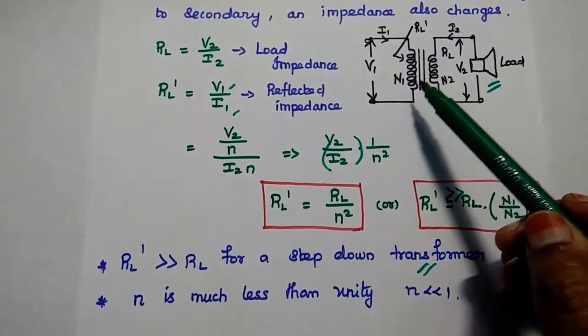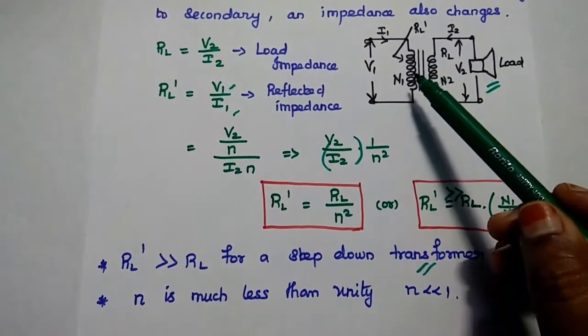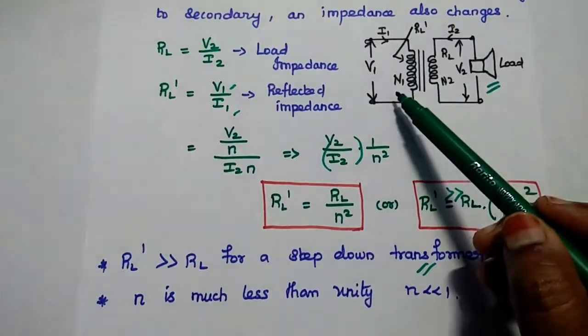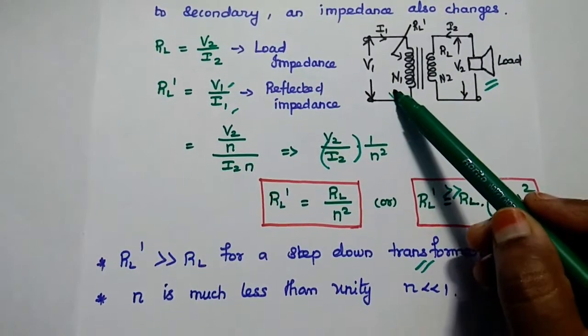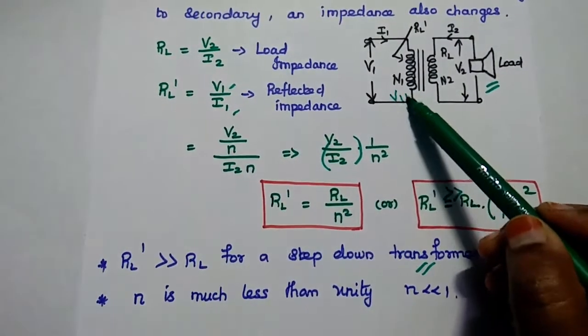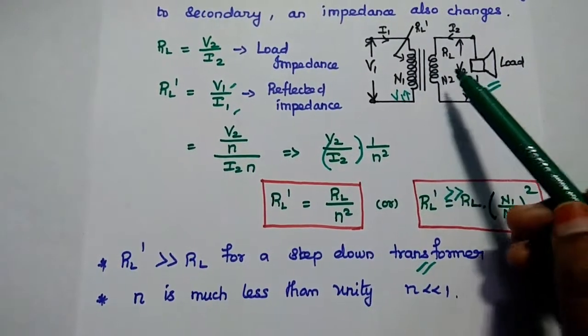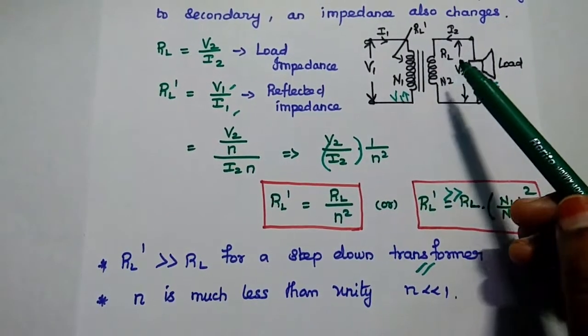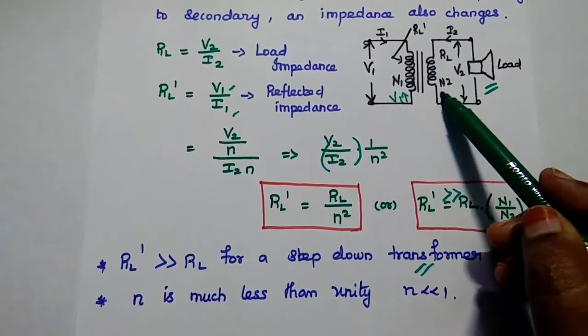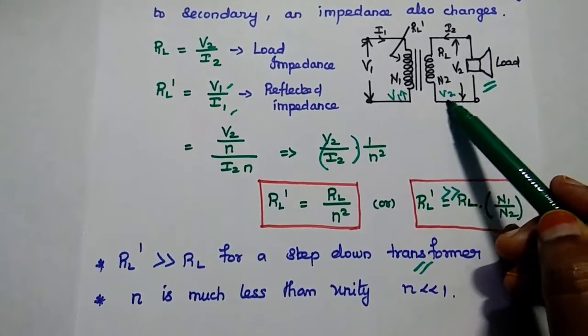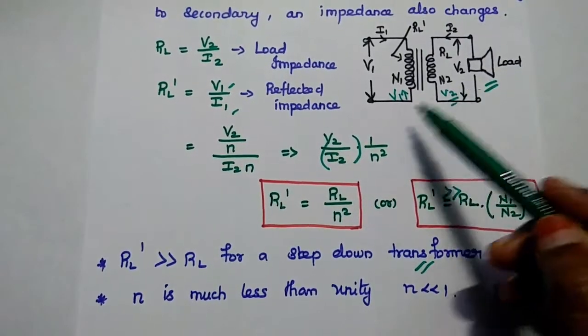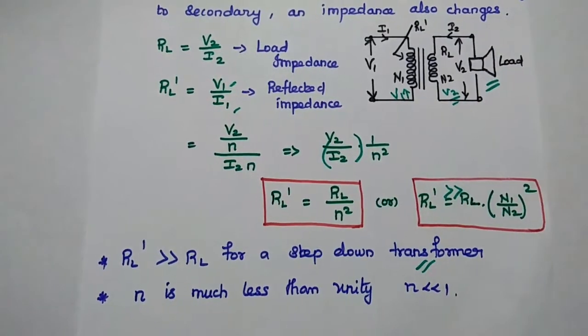When the resistance value is high, the voltage is high. When the resistance value is low, the voltage is low. This is the relation between resistance and voltage here.